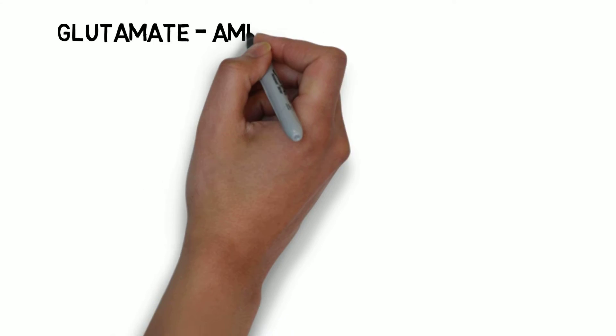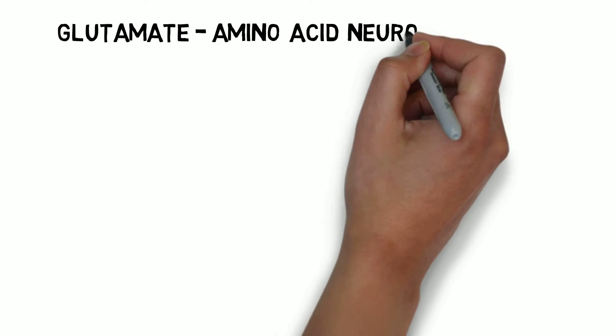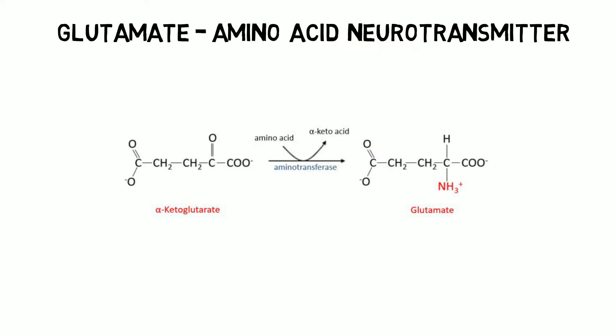Glutamate is an amino acid that also functions as a neurotransmitter. Although glutamate is obtained through the diet, it cannot pass the blood-brain barrier and thus must be synthesized in the brain. It can be synthesized from alpha-ketoglutarate, an intermediate product in the citric acid cycle.